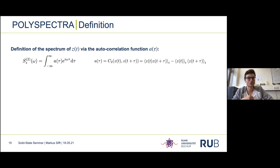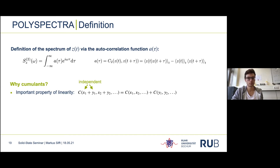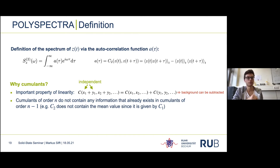There are three kinds of people in the audience: the first kind know cumulants and say 'great, he uses cumulants'; the second kind has seen cumulants but would ask why cumulants instead of moments; and the third kind wonders what cumulants even are. Cumulants have a very important property of linearity — the cumulants of two independent measurements x and y is the sum of the cumulants of each measurement. This allows us to subtract any background contribution from the measurement. Additionally, cumulants of order n do not contain any information already given by cumulants of order n−1.